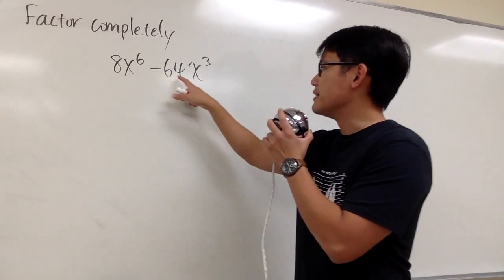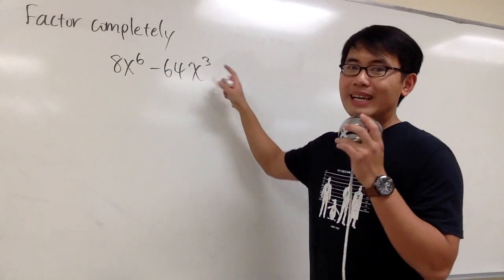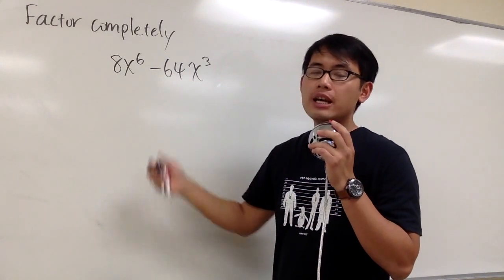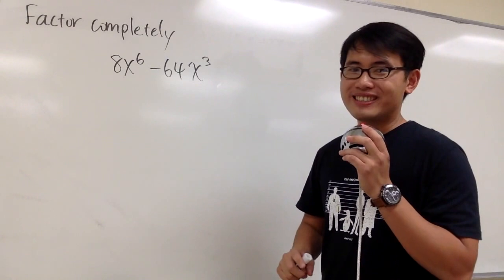We have 8x to the 6th power minus 64x to the 3rd power. We see that they both have x, and then the numbers are suspicious. So we're going to look for the common factor first.